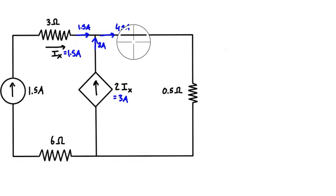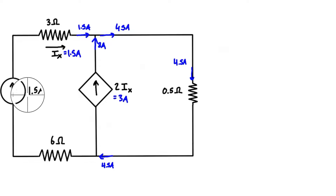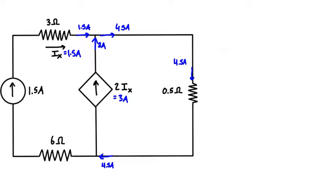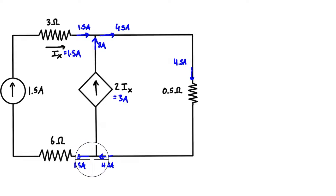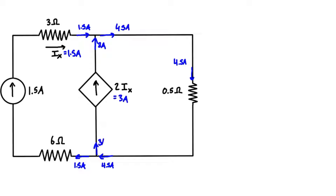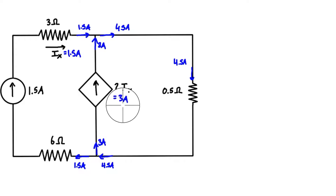The 4.5 amps passes through this whole branch, meaning 4.5 amps passes through this resistor and also into the next junction. We know there's 1.5 amps in this branch from the independent power source, so we label that as 1.5 amps. With 4.5 amps going in and 1.5 amps coming out, we still need 3 amps coming out for KCL. You could also see this directly since we know 3 amps is forced through this branch based on the dependent source condition.